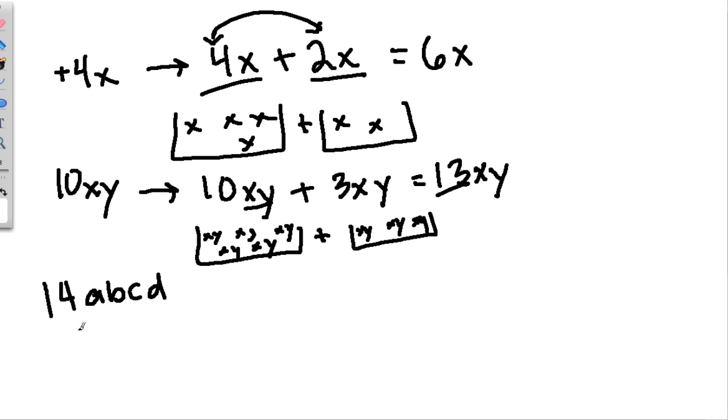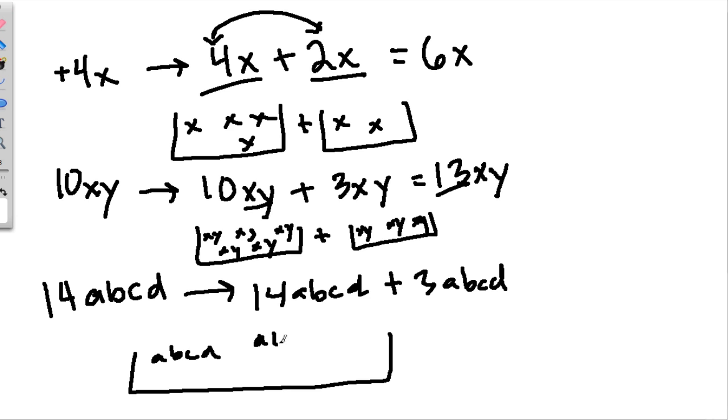Even if something is as complicated as this, 14abcd. Well, what if we took 14abcd plus 3abcd? It seems complicated, but really, we have 1 bucket full of 14 abcd's. I'm not going to draw them all out, but I just want to give you the idea. We have 14 of them in here. And then we're adding another bucket with 3 abcd's.